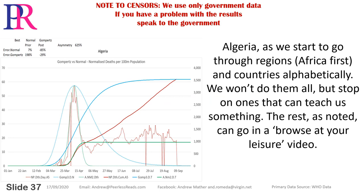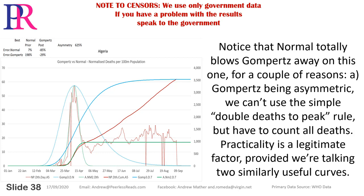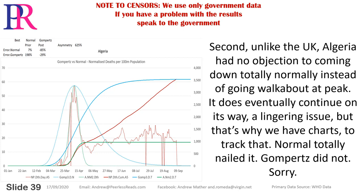Algeria — as we start to go through regions, Africa first, countries alphabetically. Normal totally blows Gompertz away on this one for a couple of reasons. First, Gompertz being asymmetric, we can't use the simple double-deaths-to-peak rule but have to count all deaths — practicality is a legitimate factor. Second, unlike the UK, Algeria had no objection to coming down totally normally instead of going walkabout at peak. It does eventually continue on its way — a lingering issue — but that's why we have charts to track that. Normal totally nailed it. Gompertz did not.